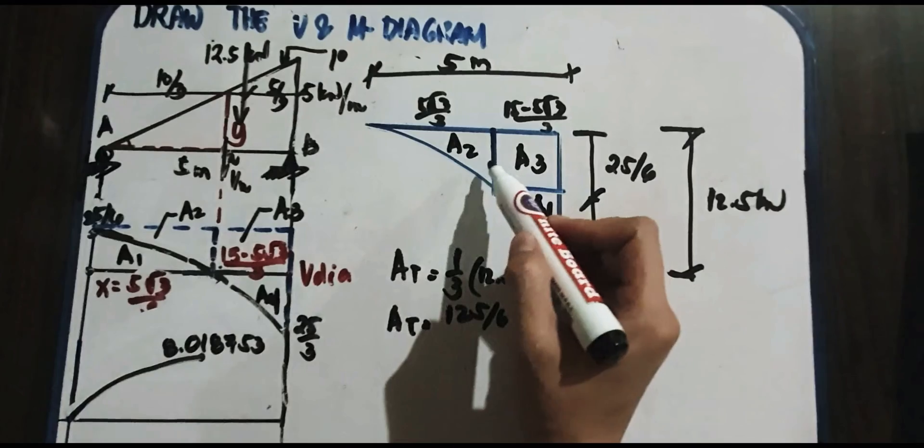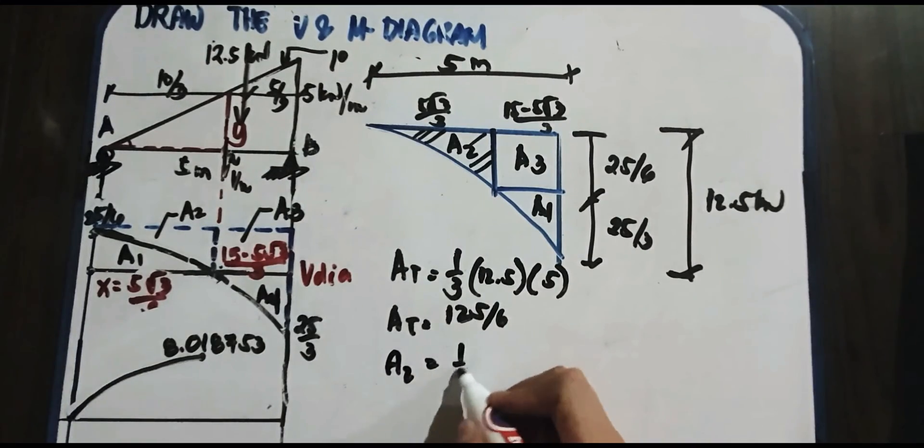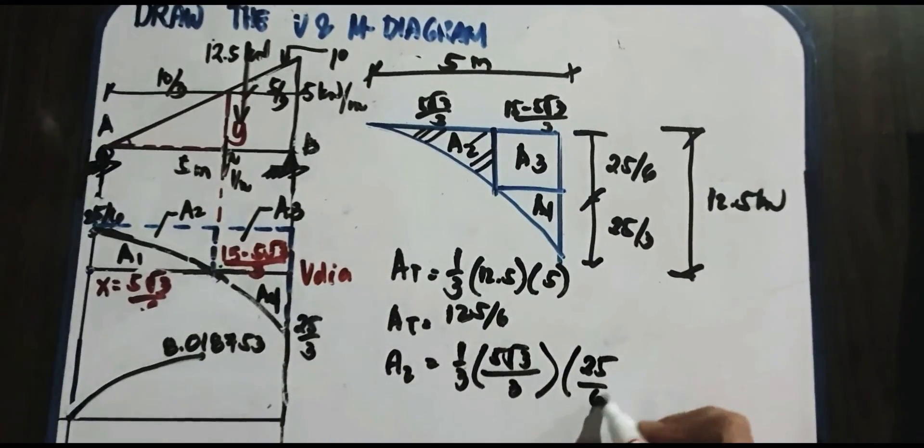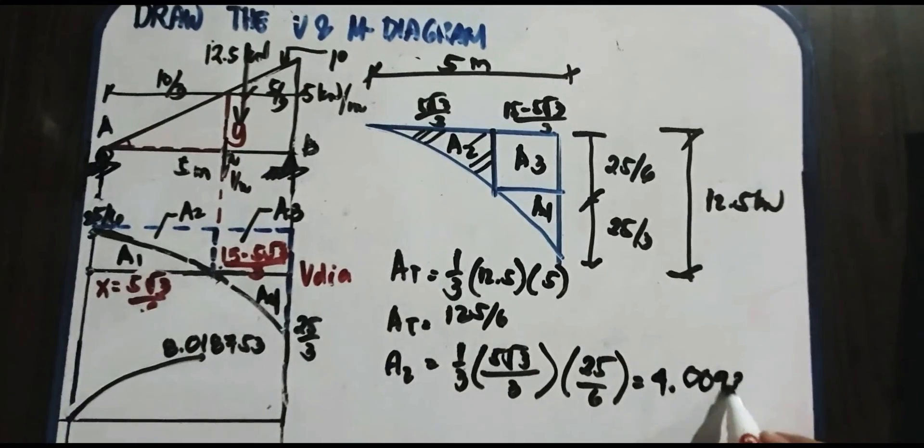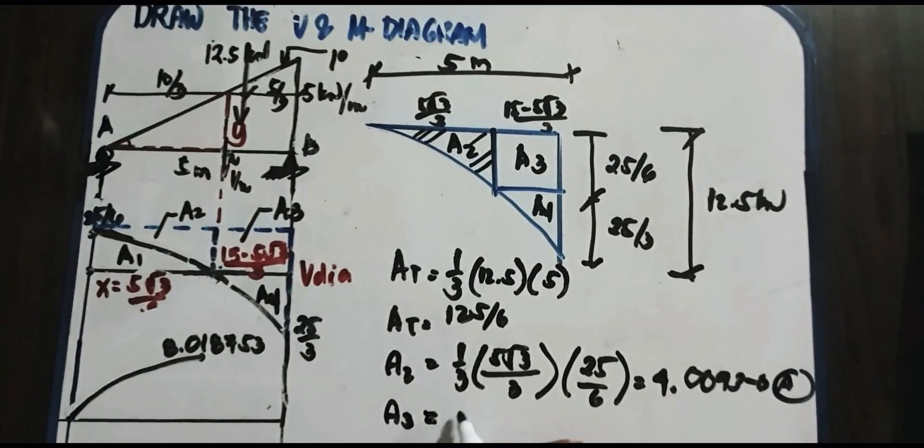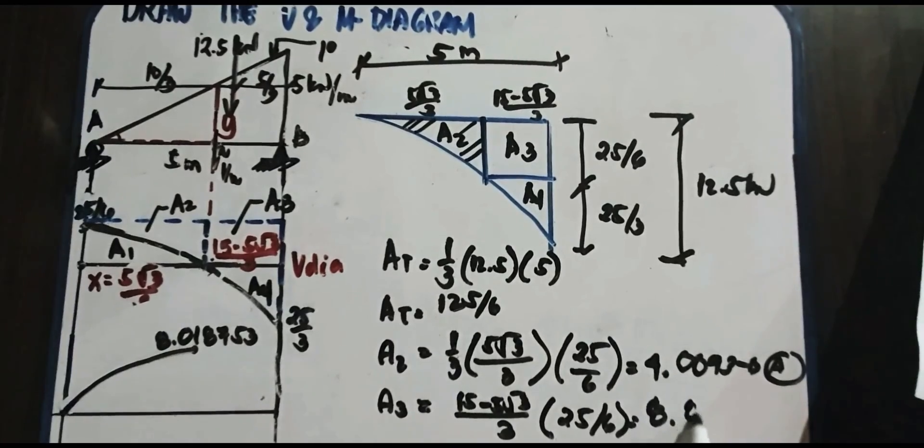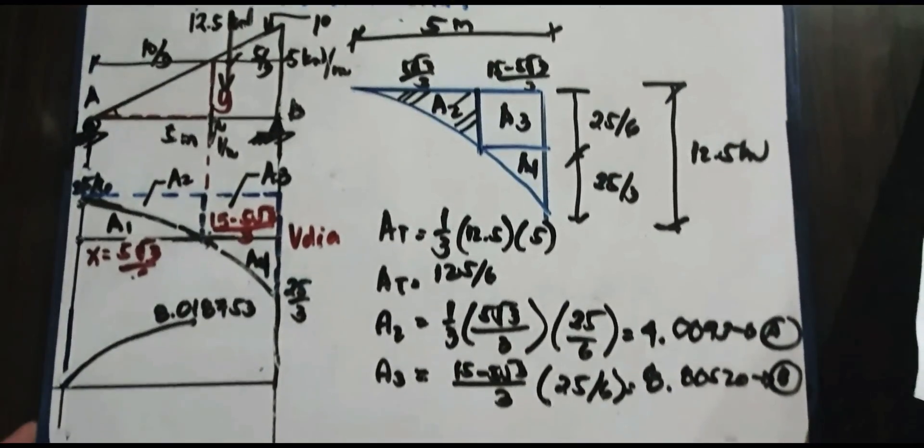Next, kunin naman natin yung area 2. Ito tayo, area 2. So 1 third din siya? So ilagay natin yan, area 2. So we have, area 2, 1 third times, ano yung base niyan? Ito, ito yung 5 square root of 3 over 3. And then yung height, that is 25 over 6. Pag pinag-multiply mo yan, that is equivalent to your area 2, 4.00936. 3 decimal store na lang po. Next, we have area 3. Ano naman yung area 3 natin? Rectangle lang yan. So we have 5 minus 5 square root of 3 over 3. Multiplied natin ng 25 over 6. So ilan yung value? We have 8.80520 store. So paano i-compute yung area 3 natin? So madali lang naman ang pag-compute ng area 3 natin. Ganito lang.